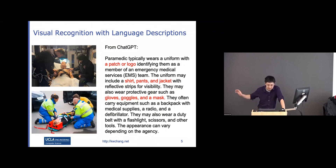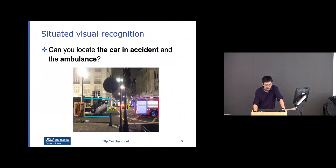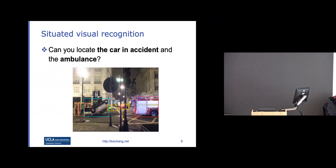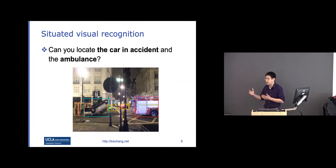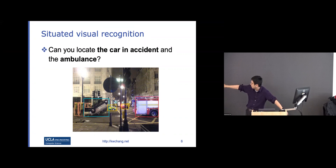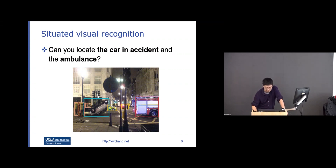Things can be more complicated than just identifying objects — we can also try to identify objects in context. For example, identifying the car in an accident: there's a yellow car visible, but there's also one that's upside down, and that's the one referred to in the text. To learn a model for this, you can't just use annotated data; ideally, this can be learned from image captions with rich text descriptions — like recognizing that an ambulance nearby and an upside-down car together indicate an accident.